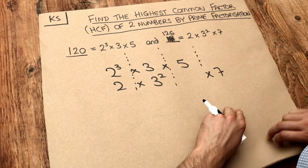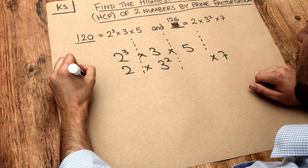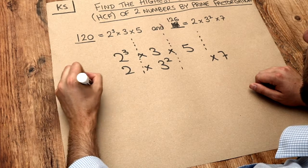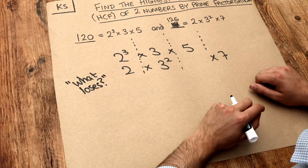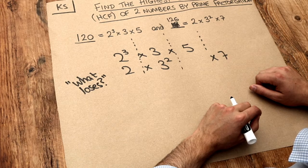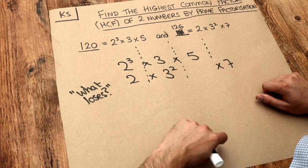Now all we need to do is work out what loses in each case. What I mean by that is to choose the one with the lowest index. The reason that works is because if I want to see what's common to both this and this...